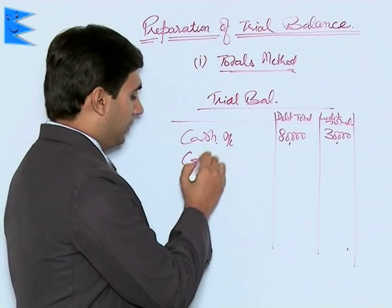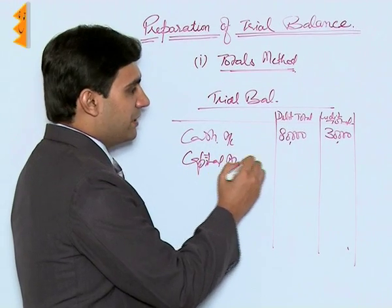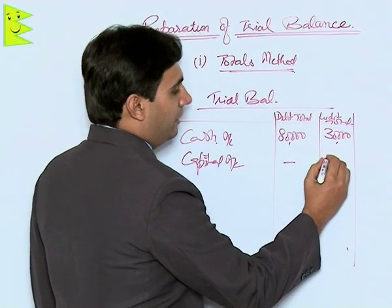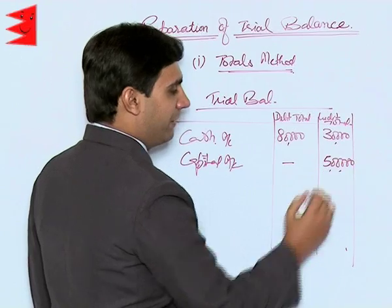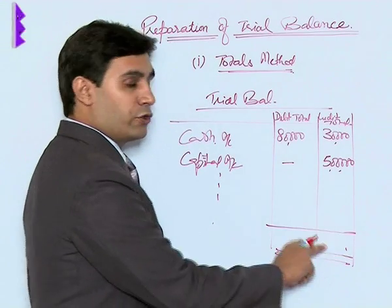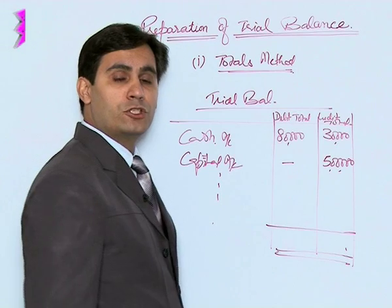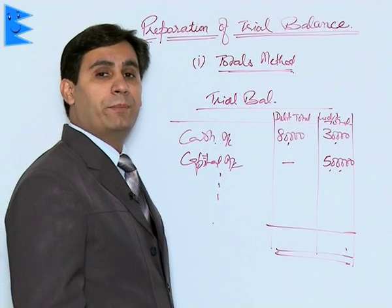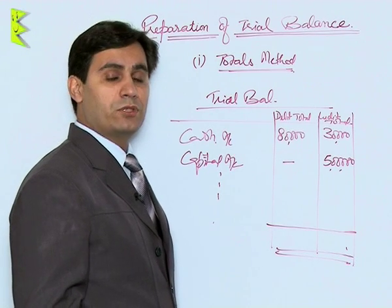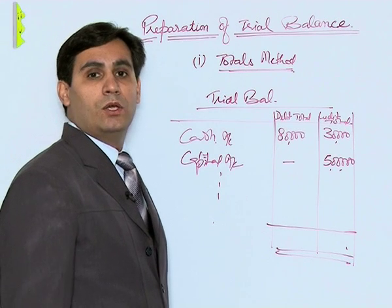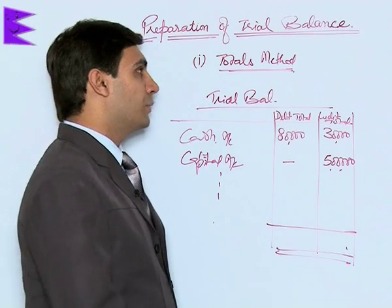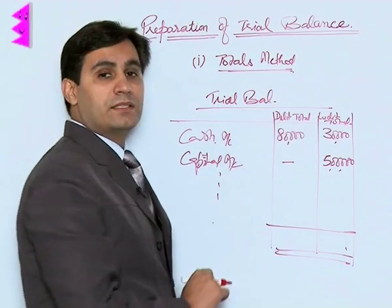For capital, assumingly there is no entry on the debit side, but on the credit side we have five lakh, so we show five lakh. Similarly, we put in all accounts. At the end, the totals should match. This tallying shows that debit aspects have been matched by their credit aspects, helping us assume that all entries have been recorded correctly, although it is not a conclusive proof.